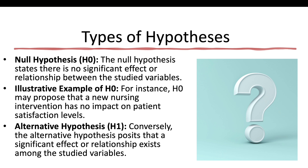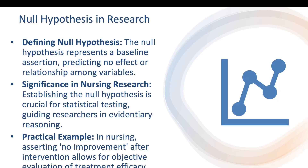The alternative hypothesis posits that a significant effect or relationship exists among the studied variables. Usually, an alternative hypothesis can be seen in your statement of the problem, particularly in the first part, where you are looking into the significant relationship of the two variables.